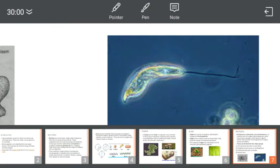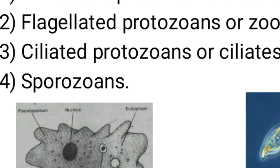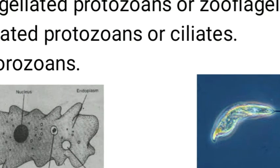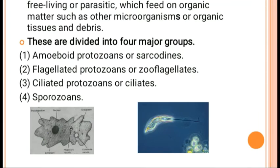The second group is flagellated protozoans — you can see a picture of one with a flagella, which is a tail-like structure. The third group is amoeboid (amoeba). The fourth group is ciliated protozoans, which have cilia — hair-like structures all over the body. There are also sporozoans, which form spore-like structures. So the four major groups are: amoeboid, flagellated, ciliated, and sporozoans.